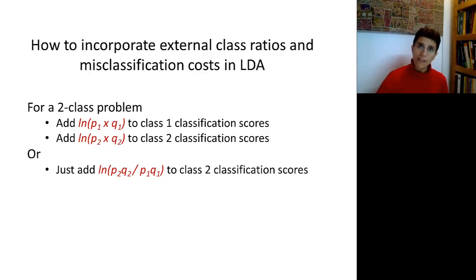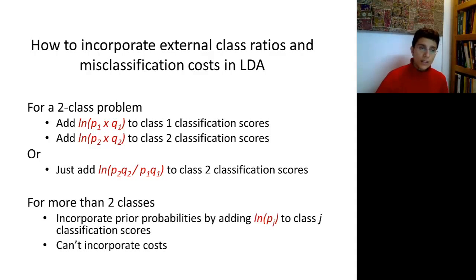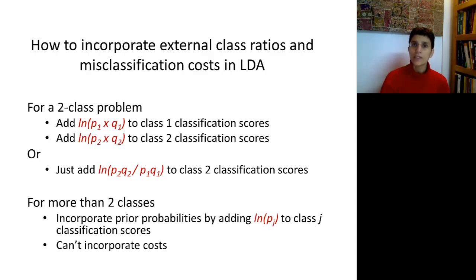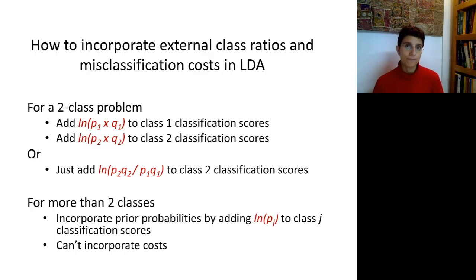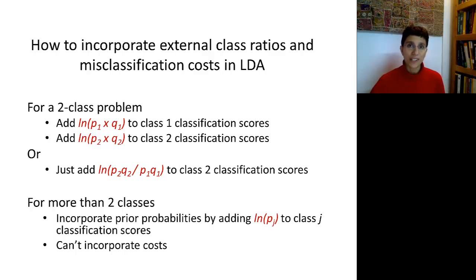What happens when we have more than two classes? We can still incorporate prior probabilities, or external class probabilities, by adding log(Pj) to each class score, but here we can't really incorporate the costs directly. Since most problems are two-class problems, just remember that there's a way to do this directly.